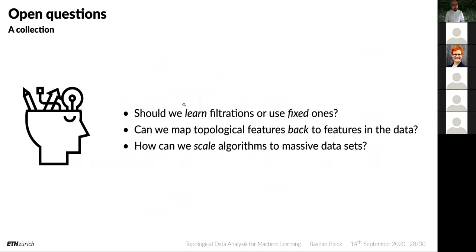Coming to an end, there are still many open questions. First: should we learn filtrations or use fixed ones? A recent paper with colleagues from Salzburg shows that learning a graph filtration can be beneficial in some cases, though fixed filtrations may be more robust for certain datasets. A related challenge: can we map topological features back to features in the data — identifying which elements create a cycle?